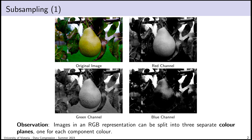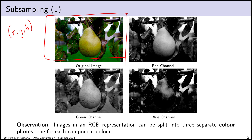We'll start by talking about the RGB representation we've been using. There's our image of a pear — notice it's very heavy in greens, with lots of different shades of green. Each pixel is represented in RGB by a triple of red, green, and blue values. Each value is between 0 and 255; we'll assume we're using 8 bits per sample.